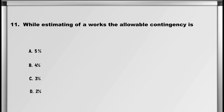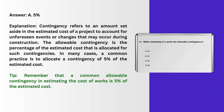Moving on to question number 11: While estimating the cost of works, the allowable contingency is: A. 5%, B. 4%, C. 3%, D. 2%. Answer: A. 5%.